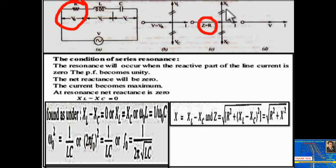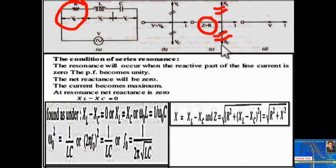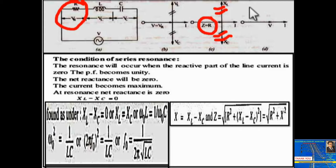The inductive reactance XL gets cancelled by the capacitive reactance XC, so the effect of both components is nullified. The whole circuit becomes purely resistive and total impedance equals resistance. For a purely resistive network, the phasor diagram shows V and I in the same phase.